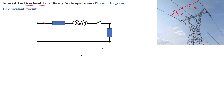Before we can draw the phasor diagram of this short transmission line equivalent circuit, we need to define the parameters. The first parameter is the sending end voltage, known as V-send, which has an angle of theta-send. This voltage will induce a current into the transmission line, which is I-send. We've got line parameters: resistance and reactance — the inductance XL that will induce a reactance. This combination of R and XL will give the impedance of the line, ZL, with an angle theta that can be calculated.